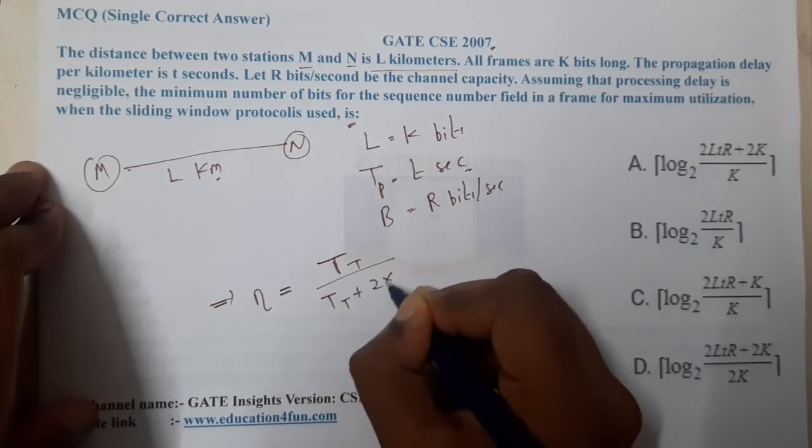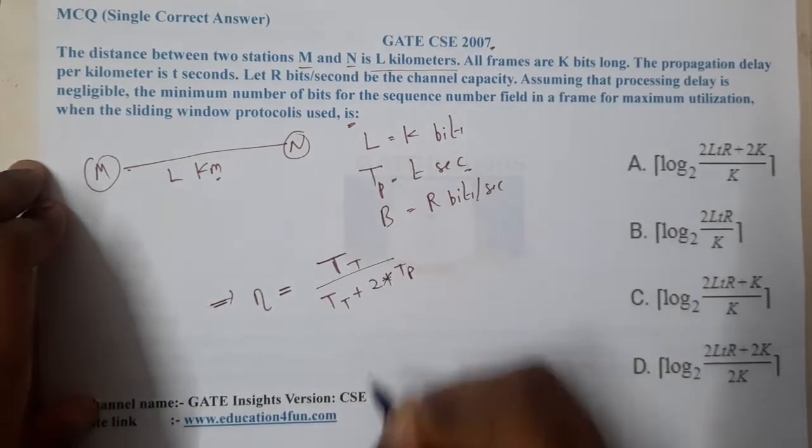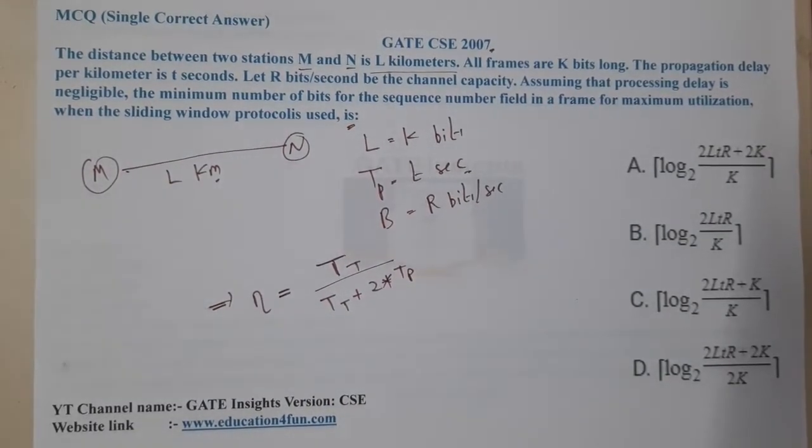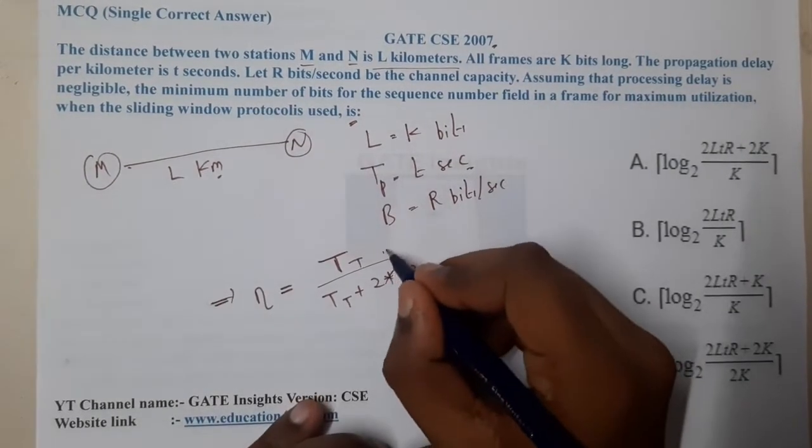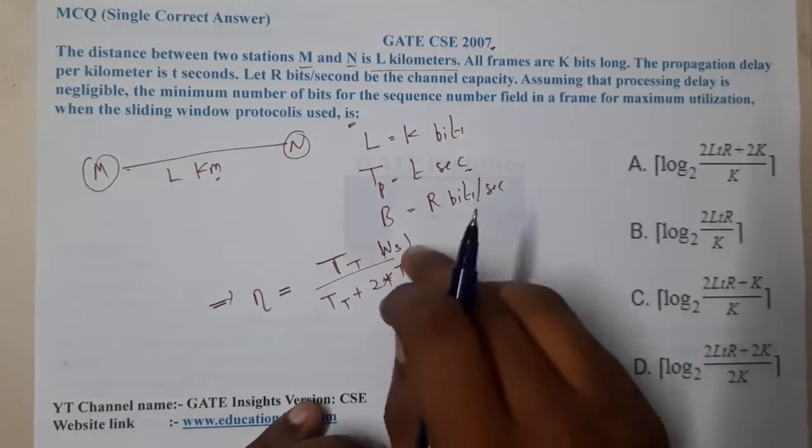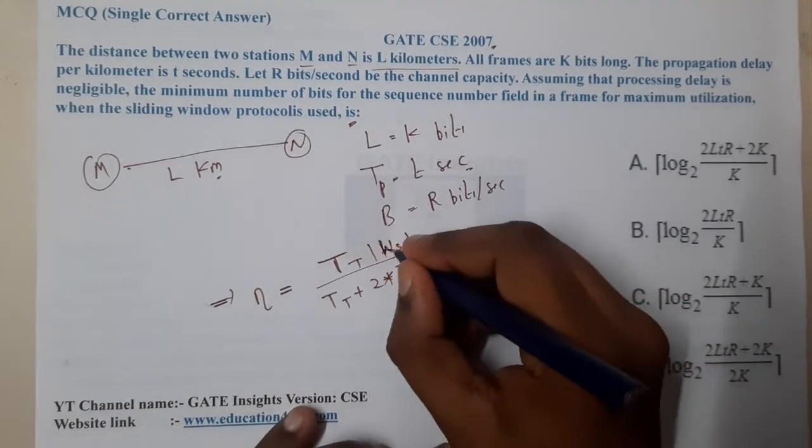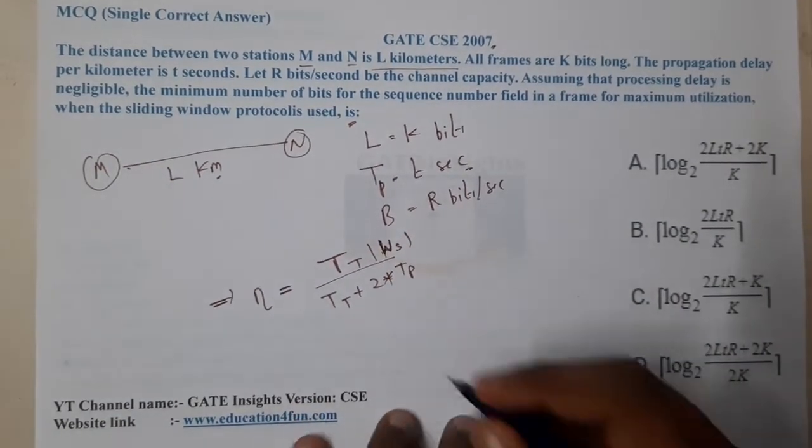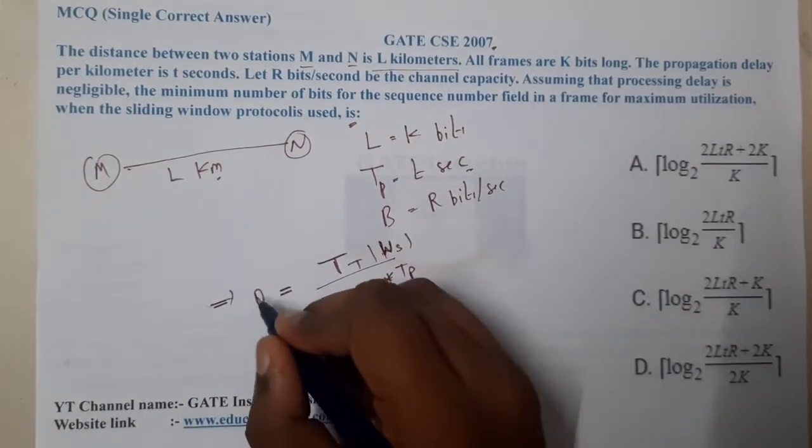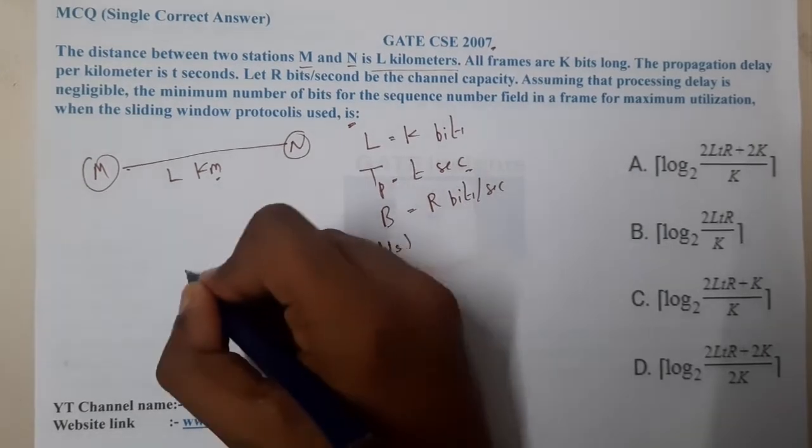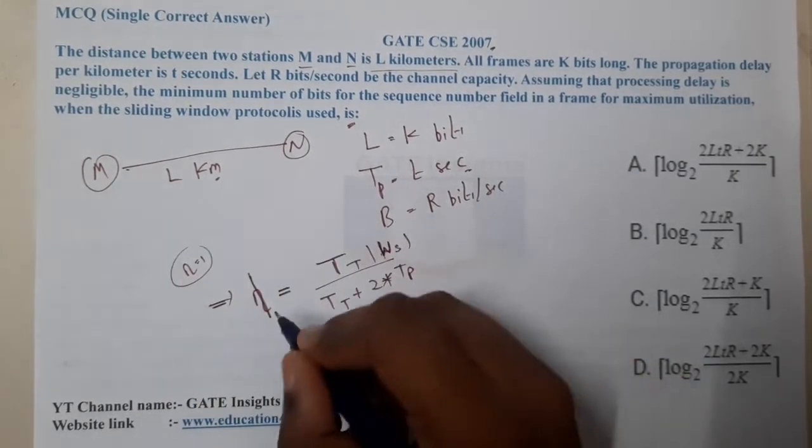If you observe carefully in the options - here we are talking with respect to sliding window protocol, so we need to write that particular window size that is what we are going to find. That is nothing but efficiency. They told maximum utilization, so efficiency equal to one.